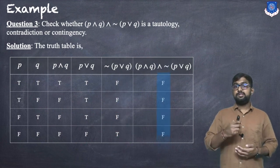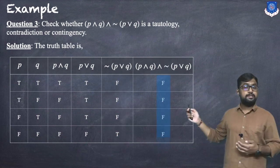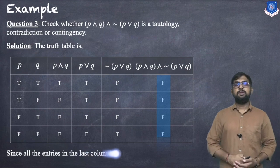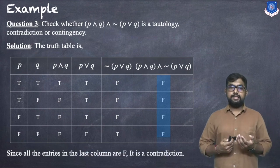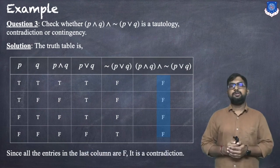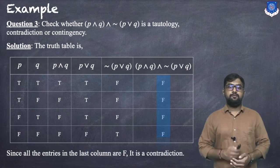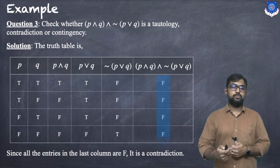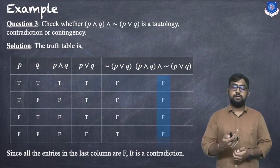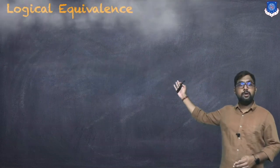All entries in the last column are false, so since all entries in the last column are false, it is a contradiction. If all were true it would be a tautology.